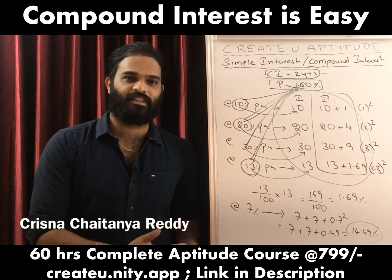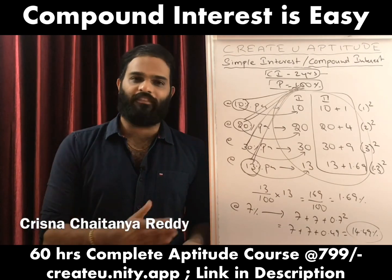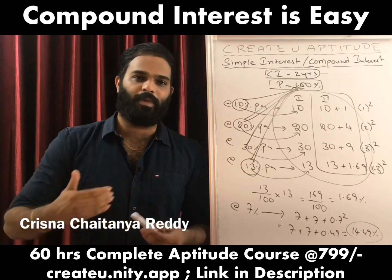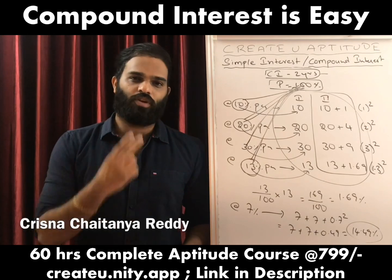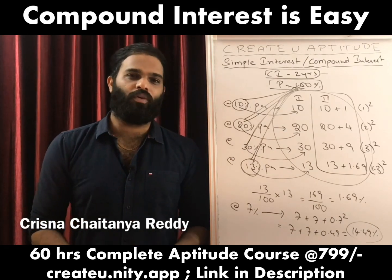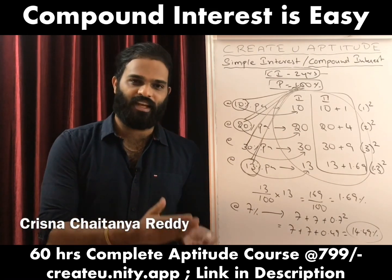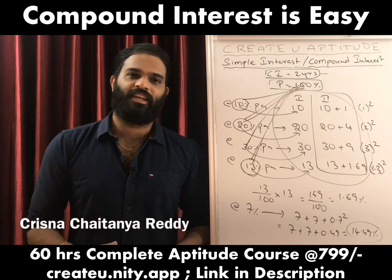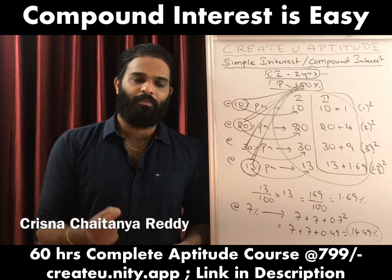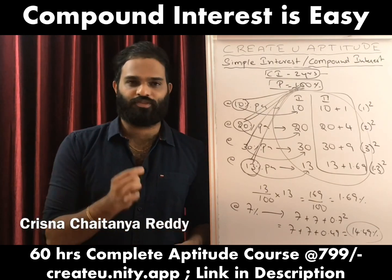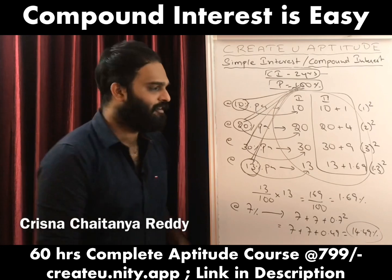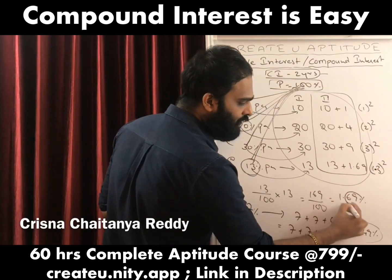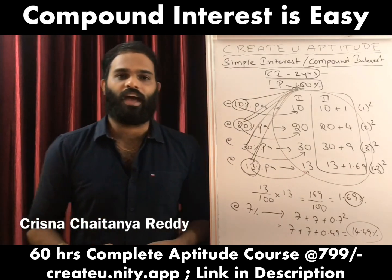So for two-year compound interest, the overall interest is two times the number plus one times the square of the number divided by 10. For example, at 15% per annum for two years: 15 + 15 + 1.5². 15 + 15 = 30, and 1.5² = 2.25 (since 15² = 225, you place the decimal before two digits). If you have a decimal after one number, the square will have a decimal after two numbers.